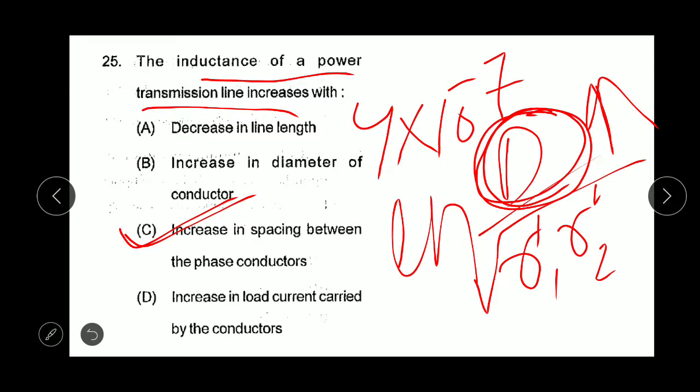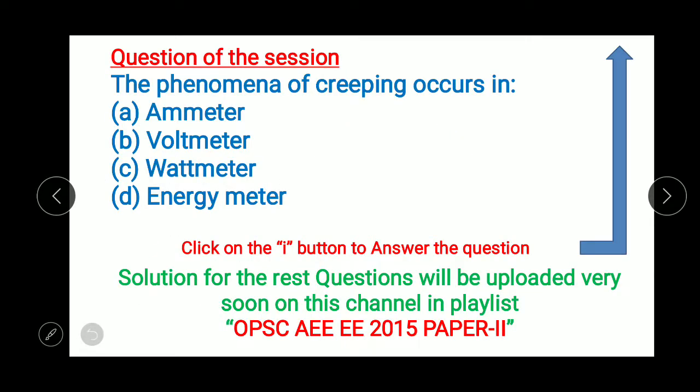This is the last question and from this video I will post a simple question. I will give a poll here in the I button and you have to answer that poll. In the poll ABCD options are given. Today's question is: the phenomena of creeping occurs in ammeter, voltmeter, wattmeter, or energy meter?